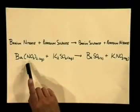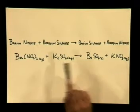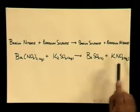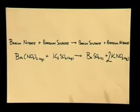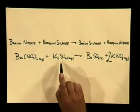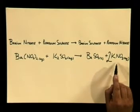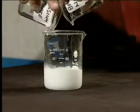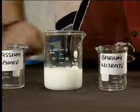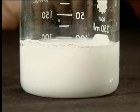Now check out your answer — I'm sure you got it correct. Barium nitrate plus potassium sulfate gives barium sulfate and potassium nitrate. To balance this we need to add a two in front of potassium nitrate, so it now reads: Ba(NO₃)₂ + K₂SO₄ → BaSO₄ + 2KNO₃. Now we need to check if this really works by doing an experiment. We add the solutions of barium nitrate and potassium sulfate together — do you see the white precipitate of barium sulfate forming? Don't you just love it when our rules help us make the correct predictions!